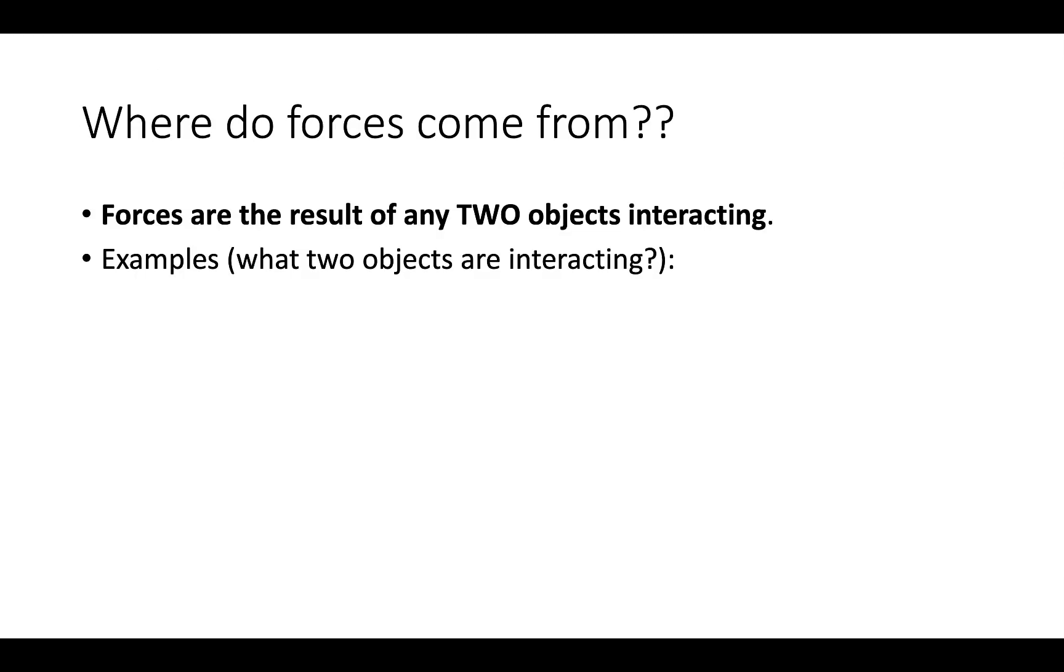Where do forces come from exactly? Forces are the result of two objects interacting. For example, when you open a door, you're either pushing or pulling on the door. That push or pull is the result of you interacting with the door. There are two objects—you and the door—and there is a resulting force. The door is actually pushing back on you, but we'll get into that later.